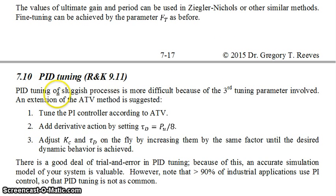PID tuning is often only for sluggish processes because a lot of times you won't add derivative control to a fast-responding process. This is more difficult because now you have a third tuning parameter to worry about. What's recommended is to extend this ATV method that I just described to you. First, you tune the PI controller according to ATV. You add derivative action by setting tau_D equals to P_U divided by 8. Then you adjust K_C and tau_D on the fly by increasing them by the same factor until the desired dynamic behavior is achieved.